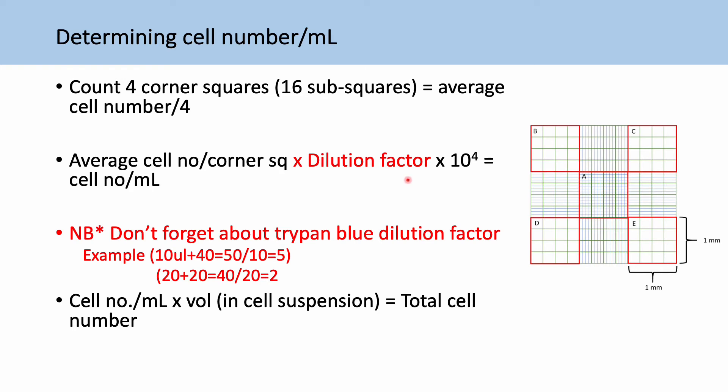And then we must remember to multiply by our dilution factor. So if we're using Trypan Blue and we've added 20 microliters of Trypan and 20 microliters of cell solution, we have a dilution factor of two. So we need to multiply by that as well.